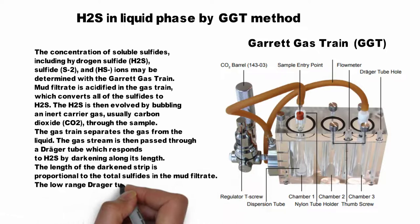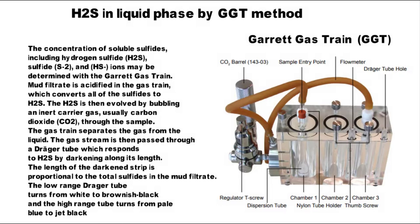The length of the darkened strip is proportional to the total sulfide in the mud filtrate. The low-range Draeger tubes turn from white to brownish-black, while the high-range tubes turn from pale blue to black.